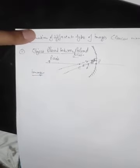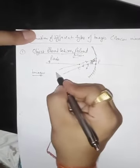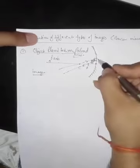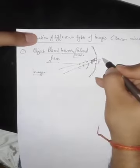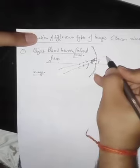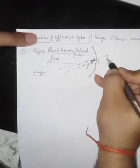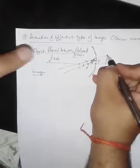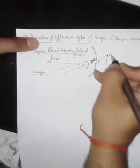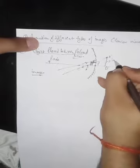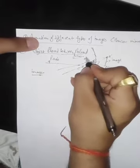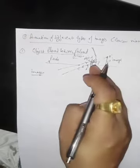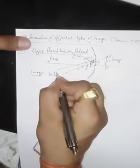When we extend both reflected rays behind the mirror, their distance keeps increasing and they never cut each other in front. So we extend the rays behind the mirror and they intersect at a point — that point A'B' is the image of AB. The image is formed behind the mirror.